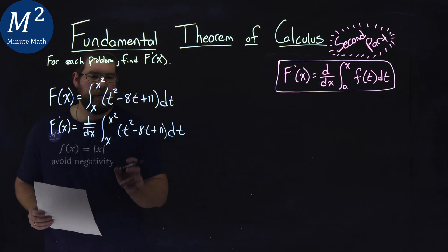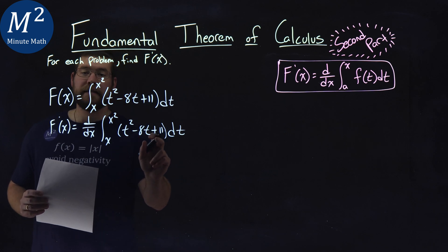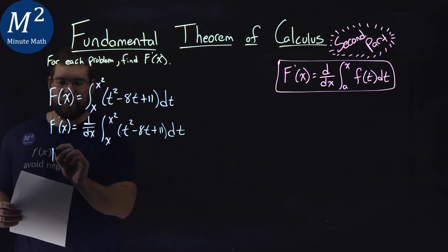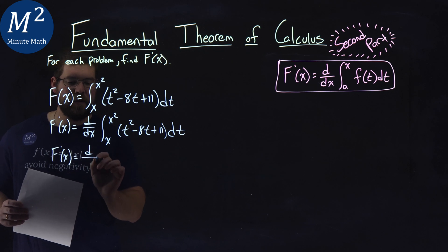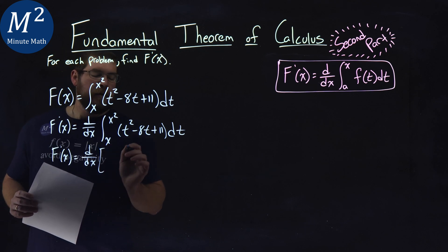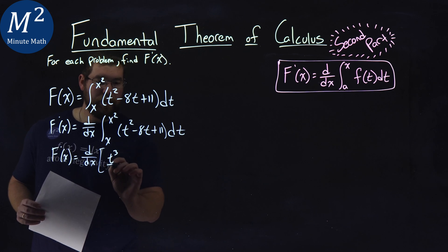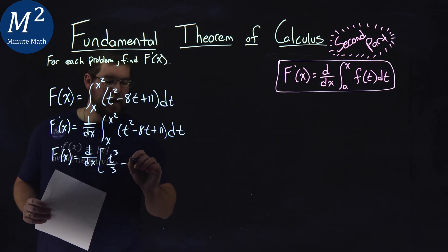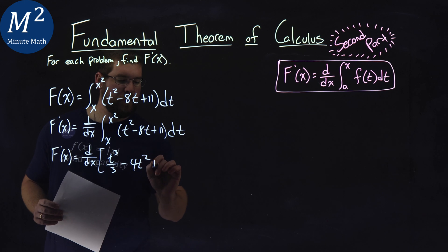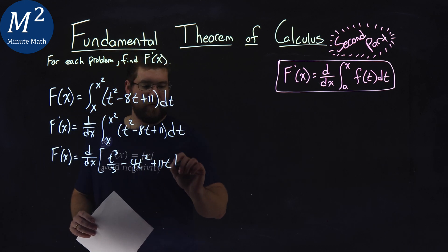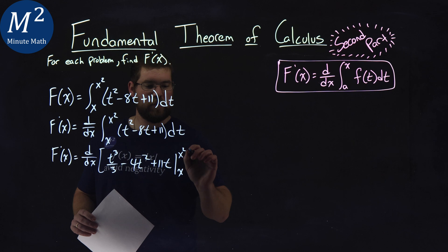First step, let's start from the inside. Let's take the integral of t squared minus 8t plus 11. Just baby steps here. f prime of x is equal to d over dx times, take the integral here. Well, that's going to be t to the third power over 3 minus 4t squared plus 11t. And we're integrating this from x to x squared.